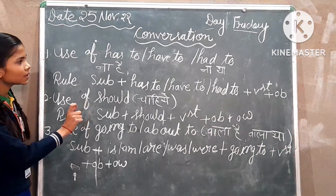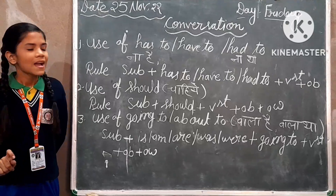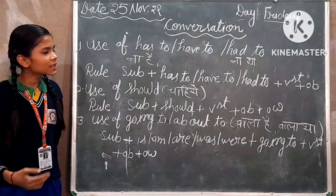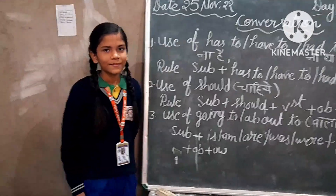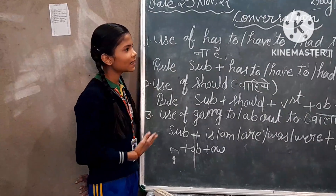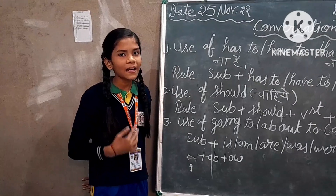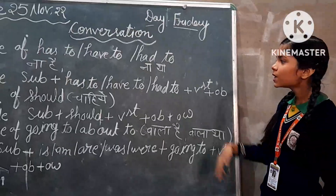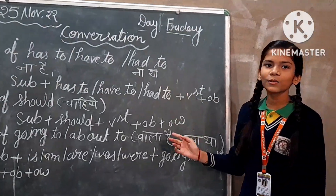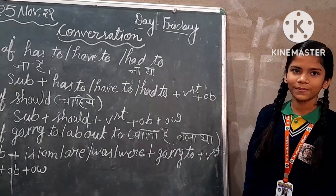Example using has to: 'Mujhe khana khana hai' means 'I have to eat food.' Another example: 'Usse pardna tha' means 'He has to read.'